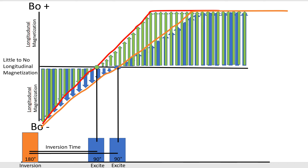Conversely, if I wanted tissue Y (blue) to be really dark, I would wait a longer inversion time — from the 180-degree inversion to the next 90-degree excitation. At that point, tissue Y is crossing its null point. If the excitation is applied then, all other tissues with positive or negative longitudinal magnetization will be flipped into the transverse plane, while tissue Y will not produce signal. That is the overall premise of T1 recovery in inversion recovery.